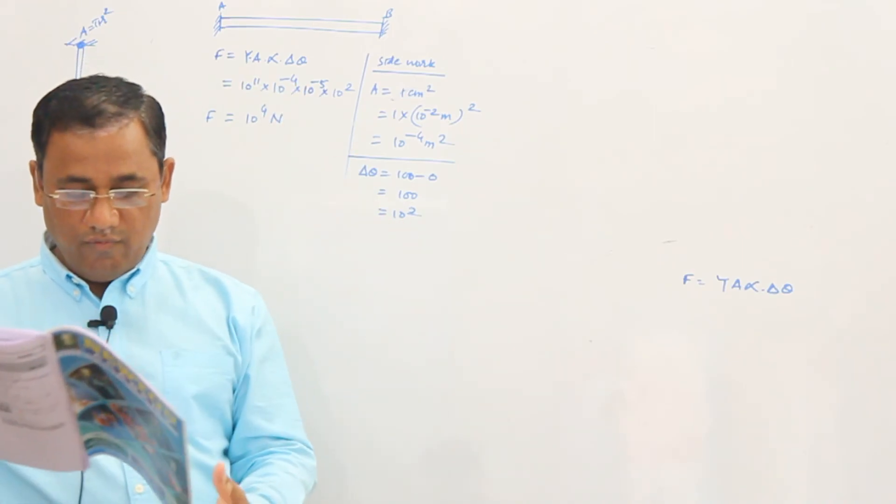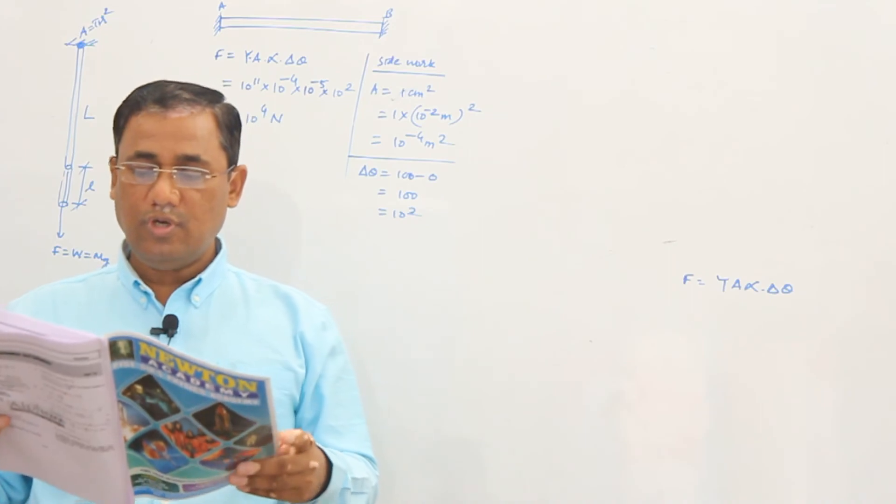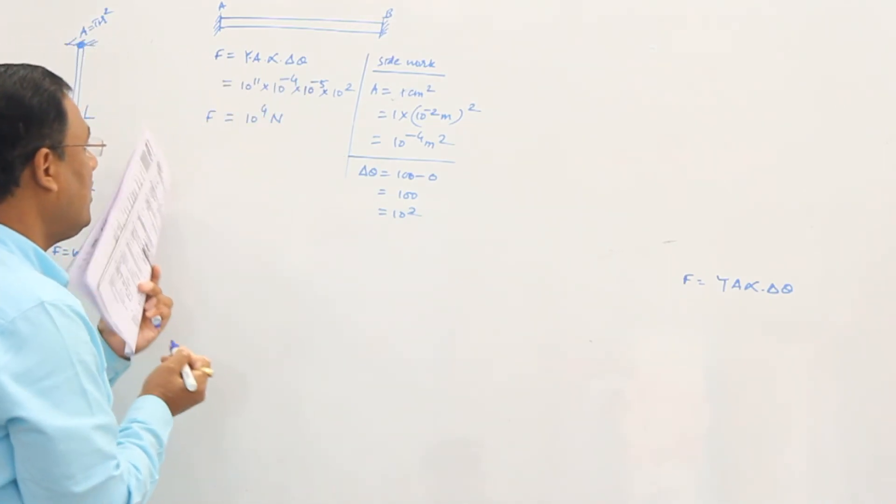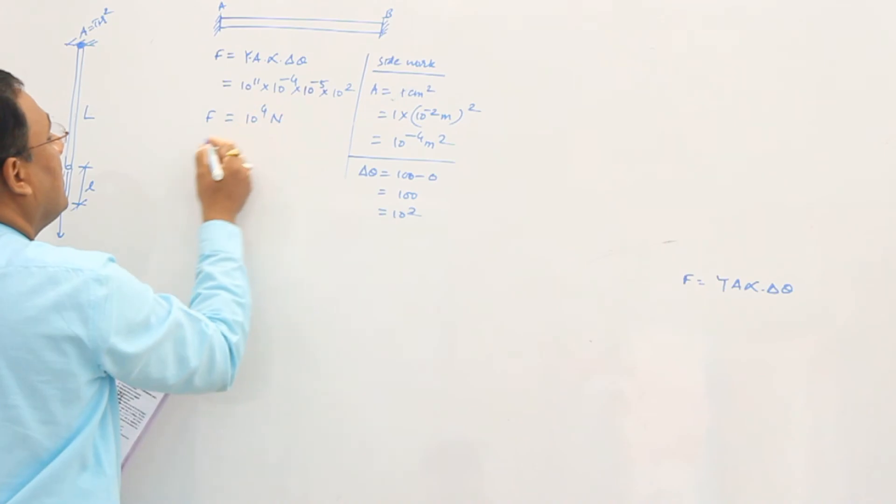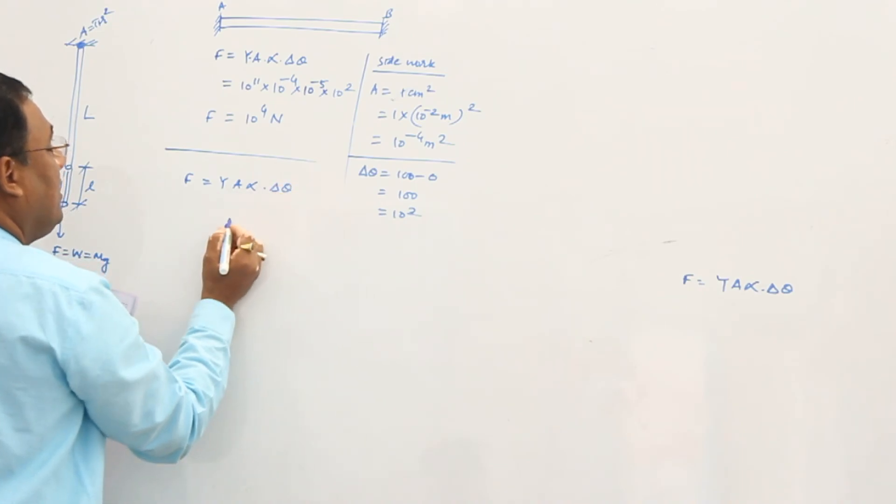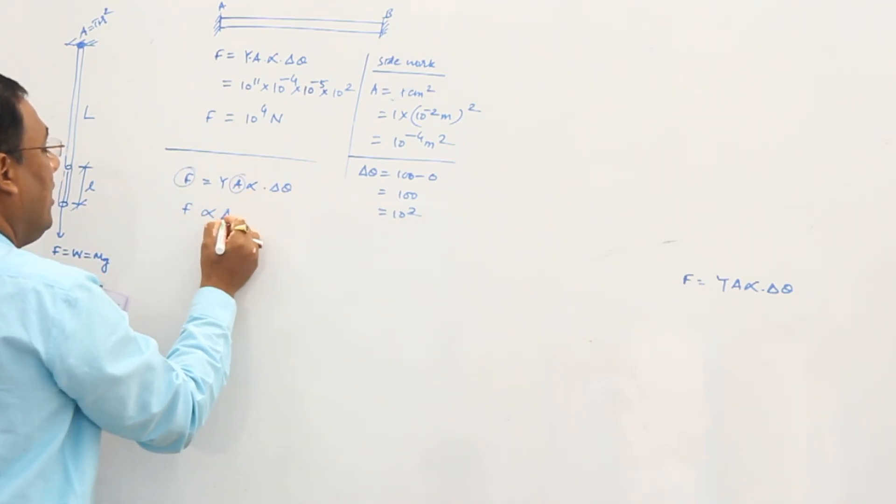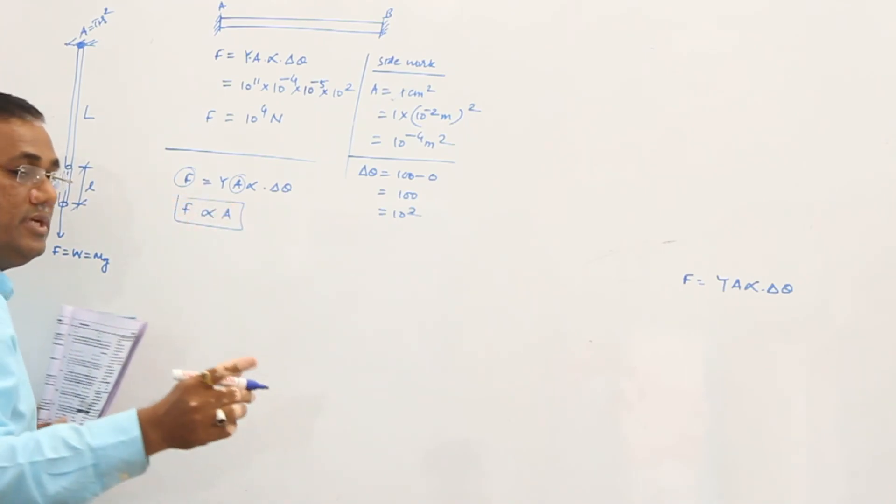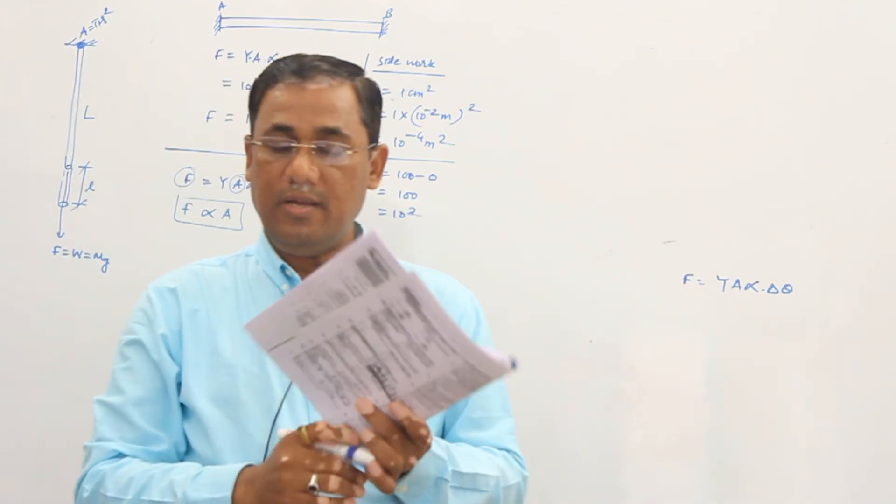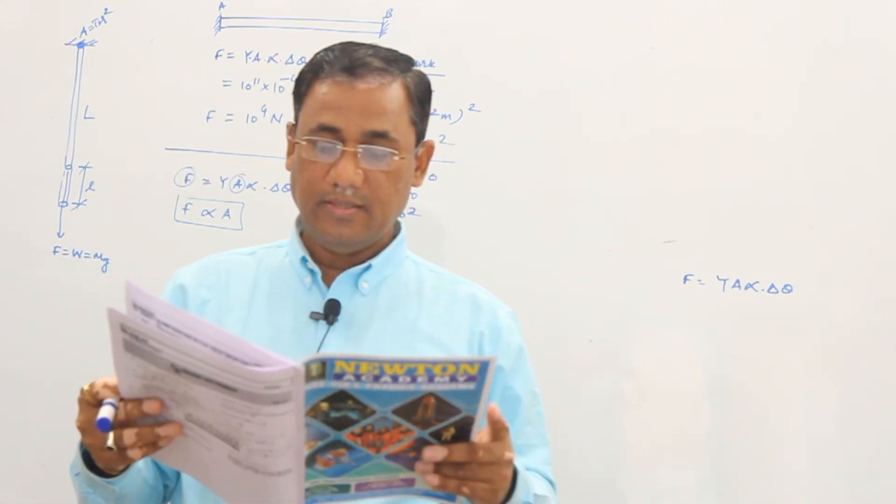A force will develop inside it. Then the force developed is proportional to what? It will be proportional to area, right? Same formula. What's the formula? Tell me. The formula is F equal to Y·A·α·ΔT. What is F's relation with A? A, B, C, D. Among A, B, C, D, the right option is clear? Yes, option C. Yes.